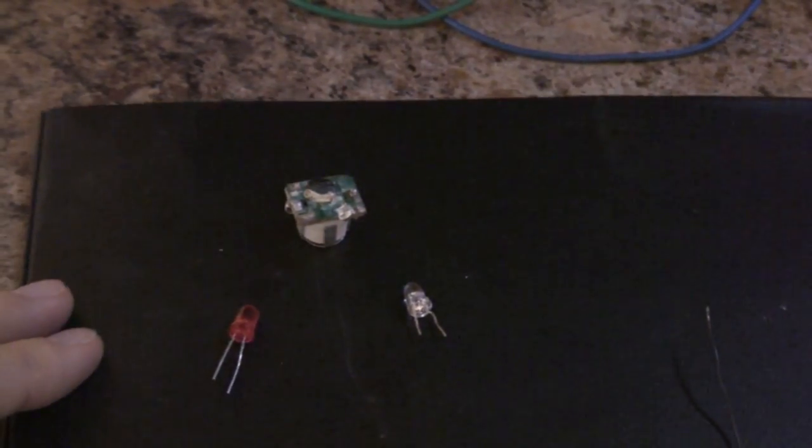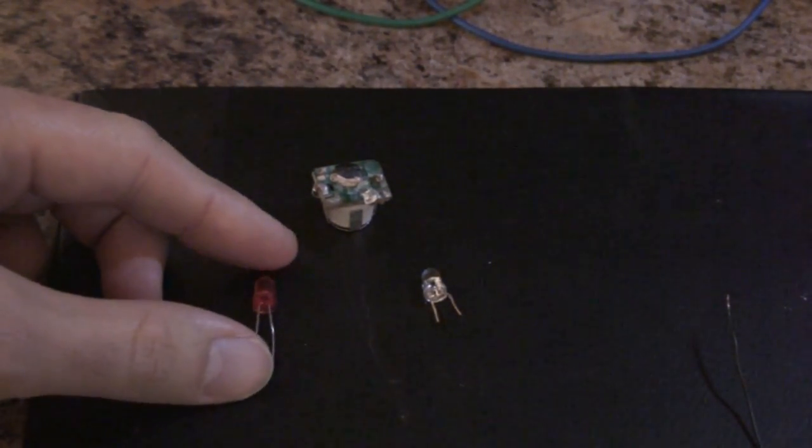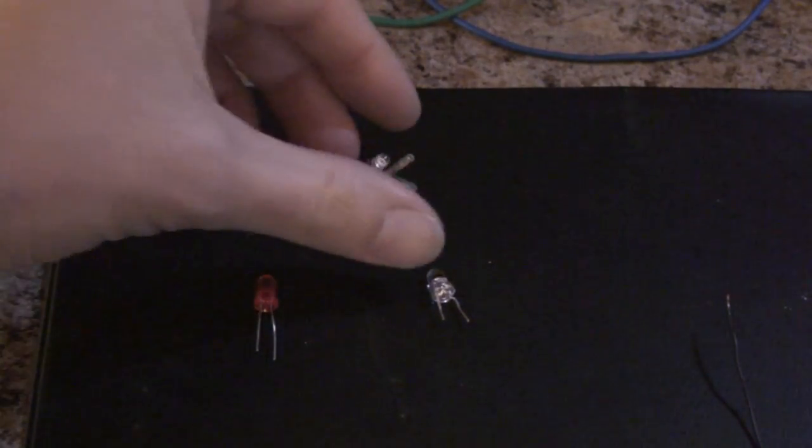I'm going to show you the forward voltage of three different kinds of LEDs. We have a red LED, a white LED, and then we have a blue LED stuck on a circuit.